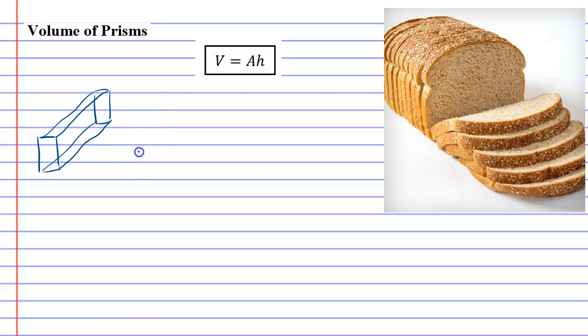There's lots of prisms you can make. You can make them with two triangles that are the same, and connecting them up with straight parallel sides. You can even do it with two circles, and connecting them up.